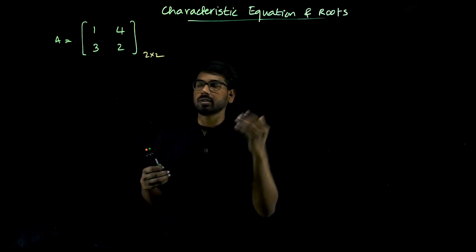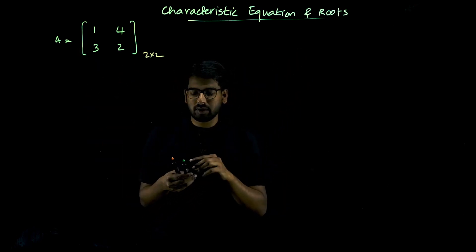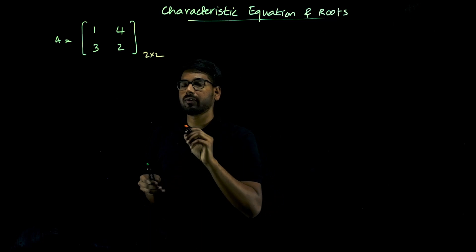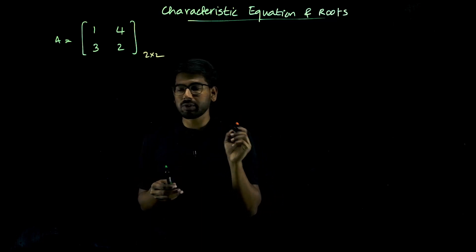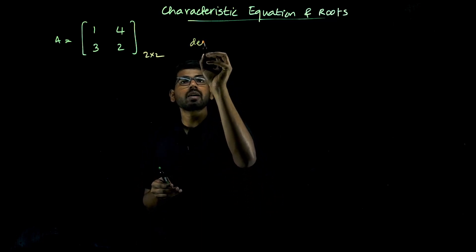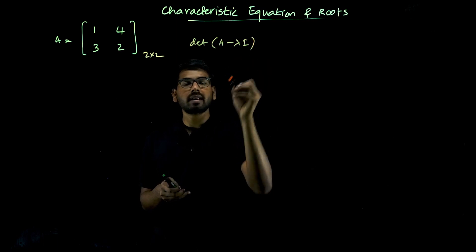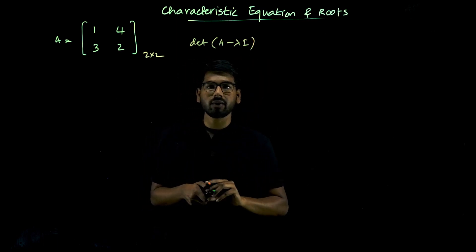Find the characteristic equation of matrix A. To find the characteristic equation of matrix A, we need to find the determinant of A minus lambda I.